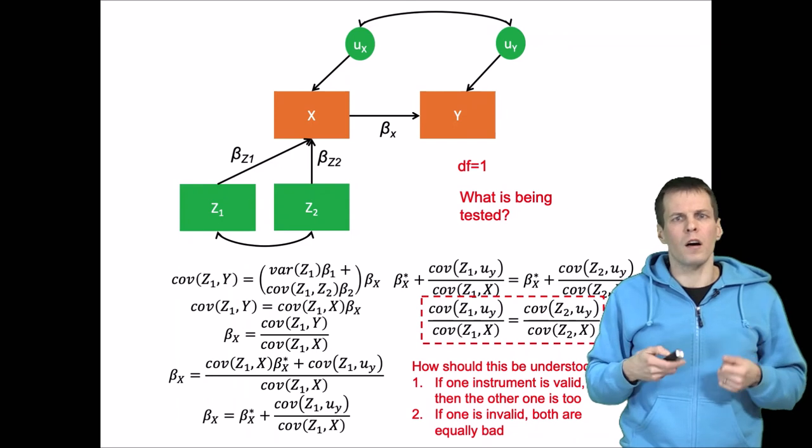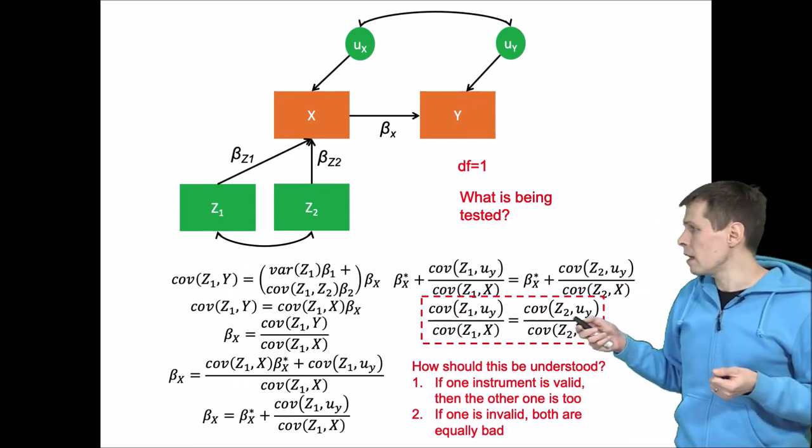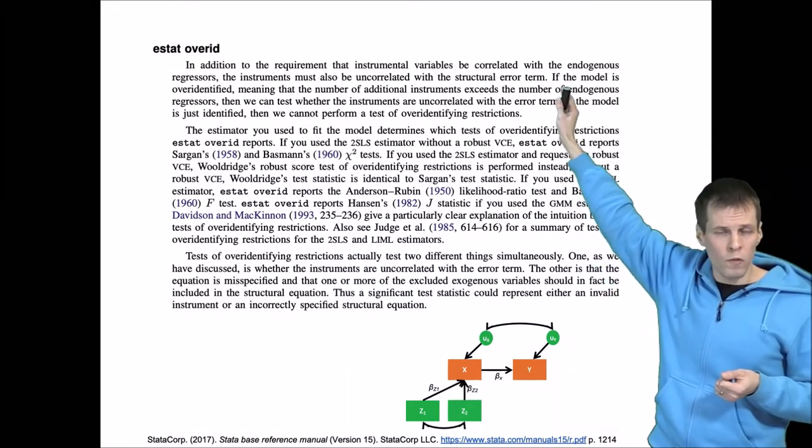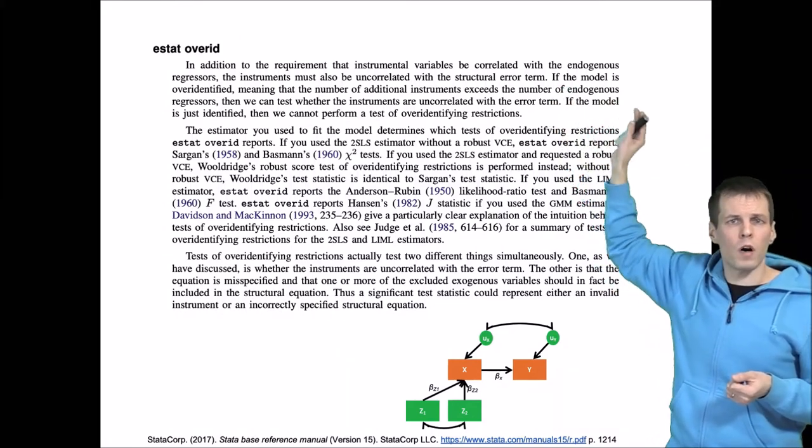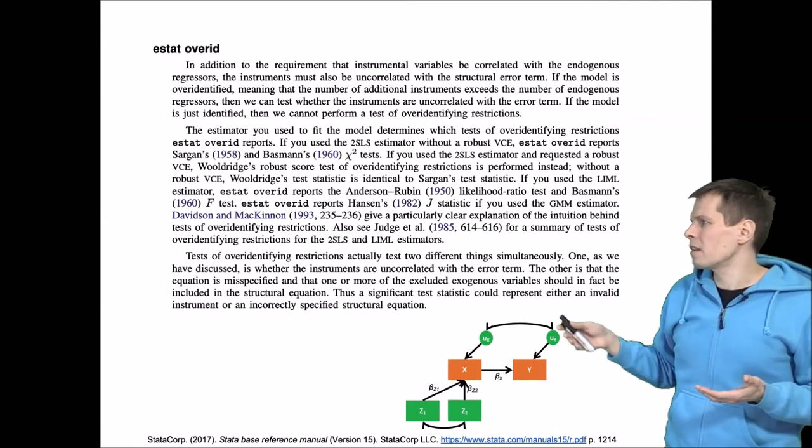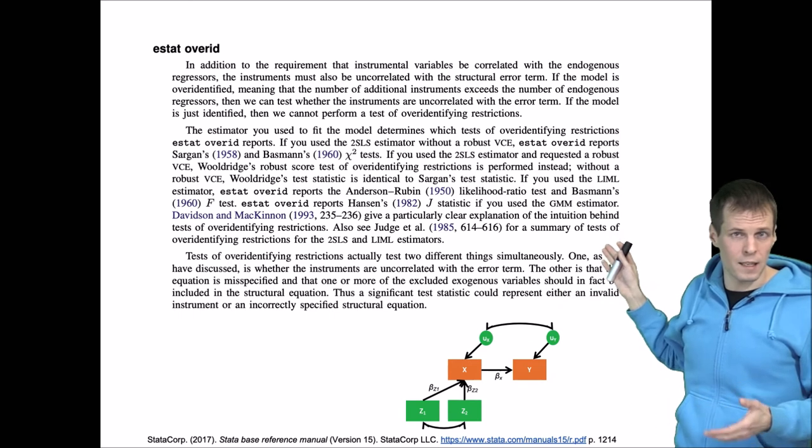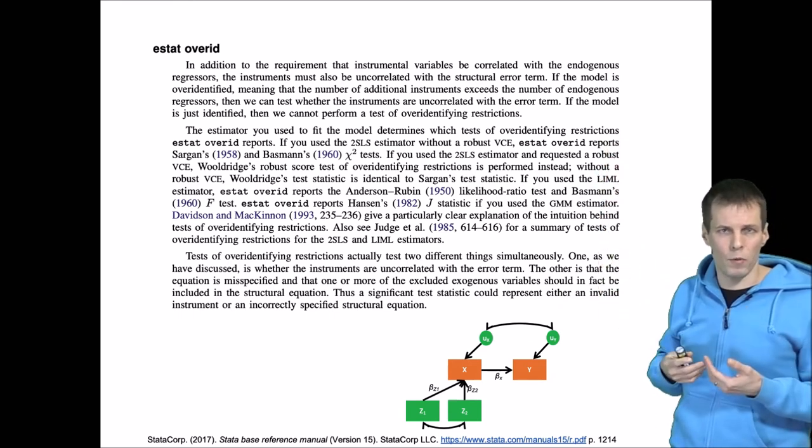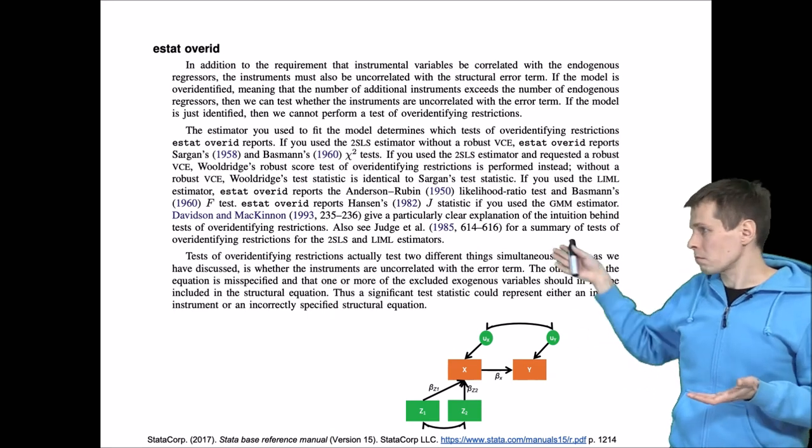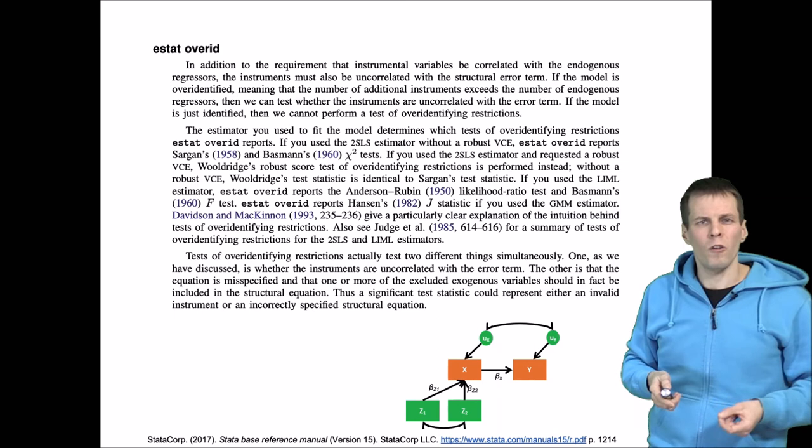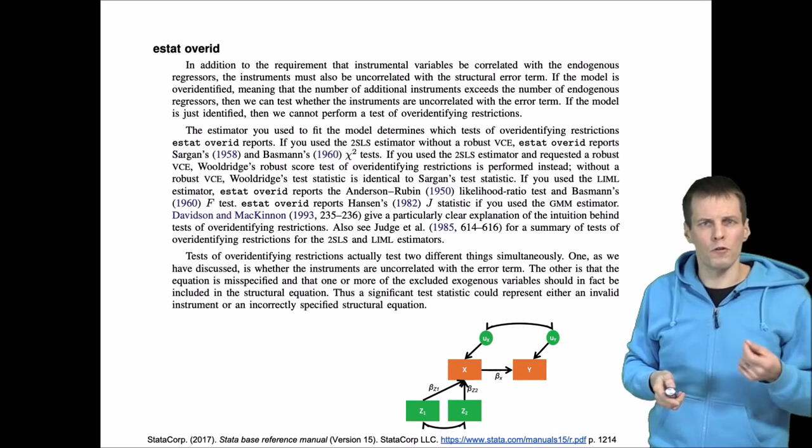There are a few implementations of this idea. Let's take a look at Stata user manual. So Stata has this estat overid, which gives you over-identification tests. And they explain that there are a number of different tests that they can calculate based on how you estimated the instrumental variable model. Did you use GMM? Did you use maximum likelihood or something else? But all these tests boil down to two basic ideas.